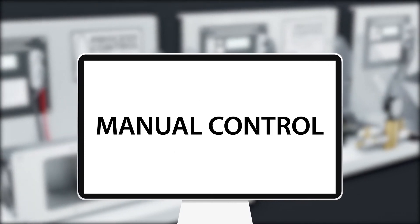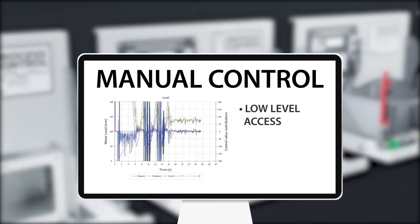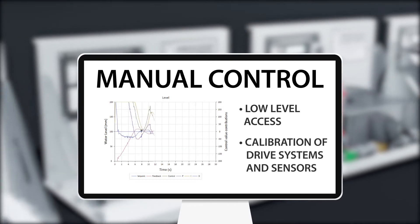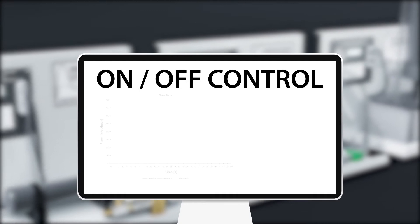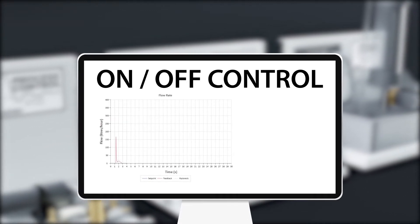Manual control software gives low-level access to the drive and load in each system and allows students to calibrate the sensors and drive systems. On-off control software allows students to explore controlling each system with a simple on-off algorithm to see the oscillations this produces and explore the effects of hysteresis.